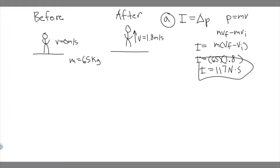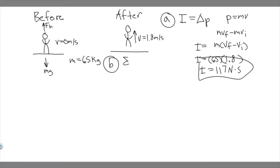Now let's move on to B. For B, we're trying to find what force does the floor exert on the player before the jump. So if we draw the free body diagram, we have mg going down, and then the force that the floor is exerting is just the normal force, because the object is just going to push back whatever force is being applied downwards. We can find this by taking the sum of the forces in the y direction.